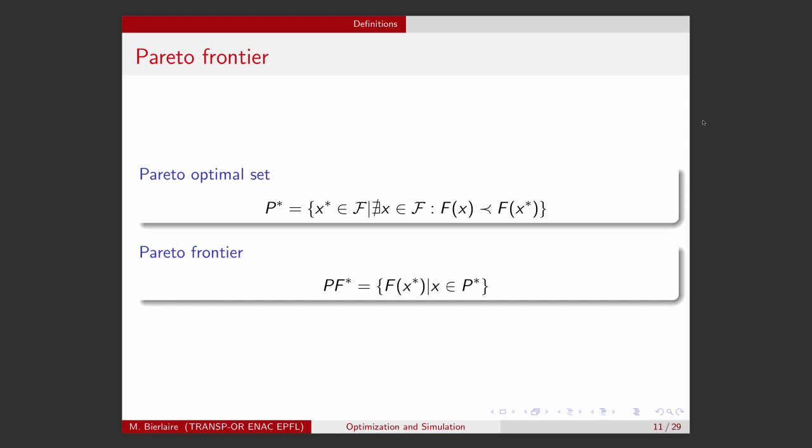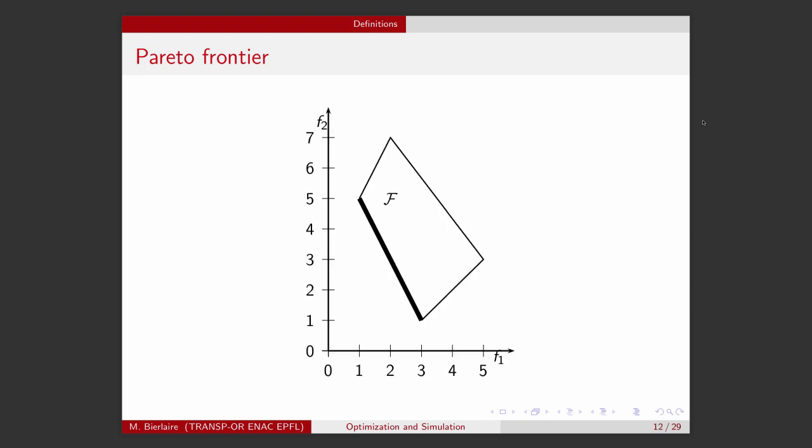In the context of Pareto-optimality, we will call the Pareto-optimal set the set that we just defined, so the set of solutions that are such that they are not dominated by any feasible point. And the corresponding values of the objective function, so the vector of values of the objective function, is called the Pareto-frontier. I have a similar plot here than the previous one, so two objectives, F-1 and F-2, that we want to minimize. And I have here a polyhedron as feasible set, capital F. And the Pareto-frontier is represented in a thick line here, so it contains all the points that are Pareto-optimal, in the sense that there is no feasible point that dominates them.